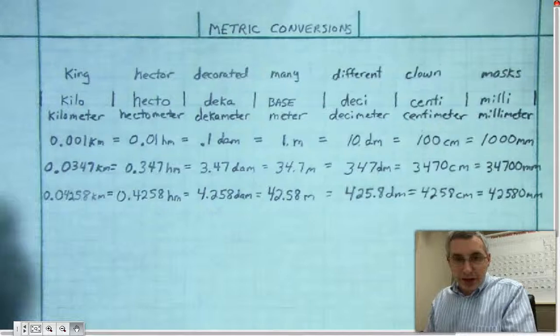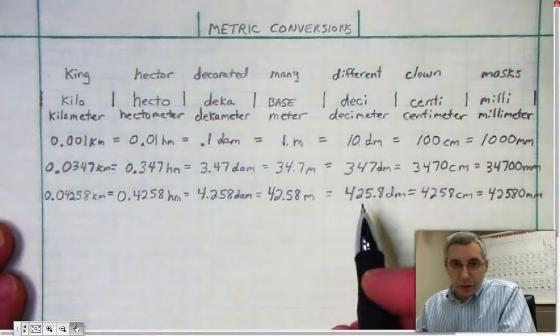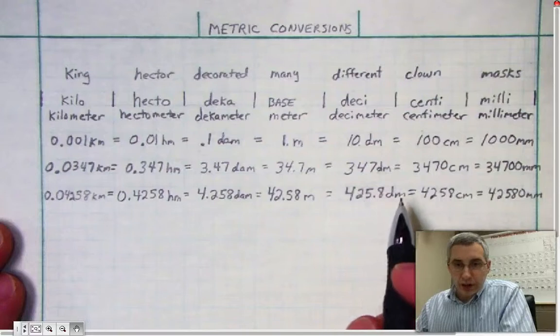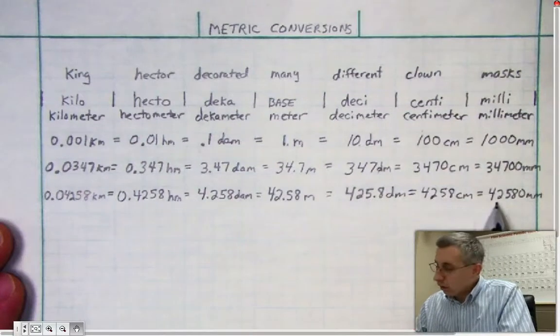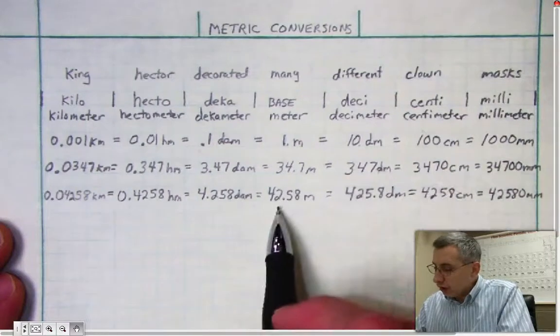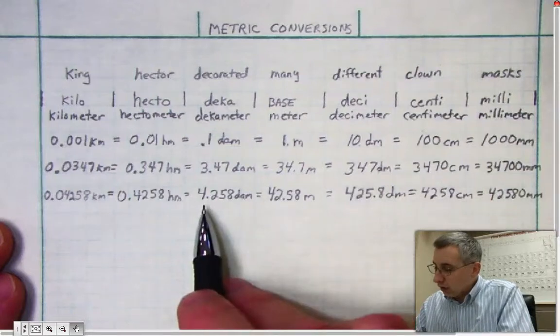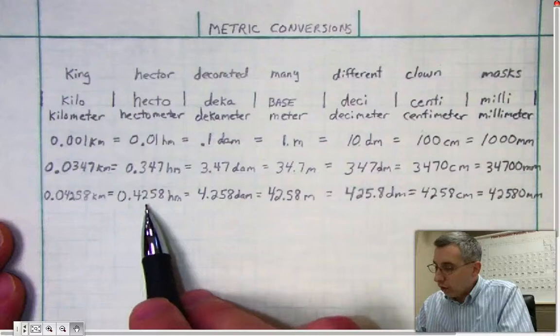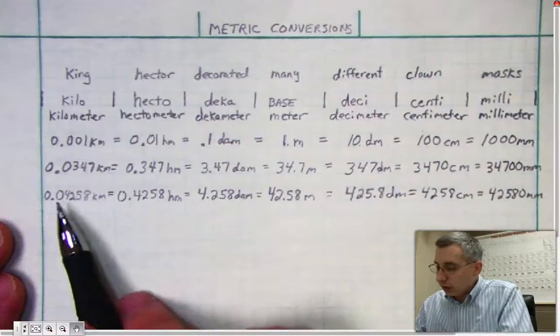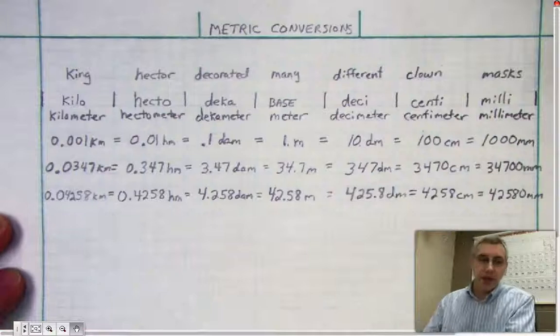Okay, now we're back. Here are the answers. You should have taken 425.8 decimeters and that turns into 4258 centimeters, 42580 millimeters. Going the other direction, for meters you should have 42.58, for decameters 4.258, for hectometers 0.4258, and for kilometers 0.04258 kilometers.